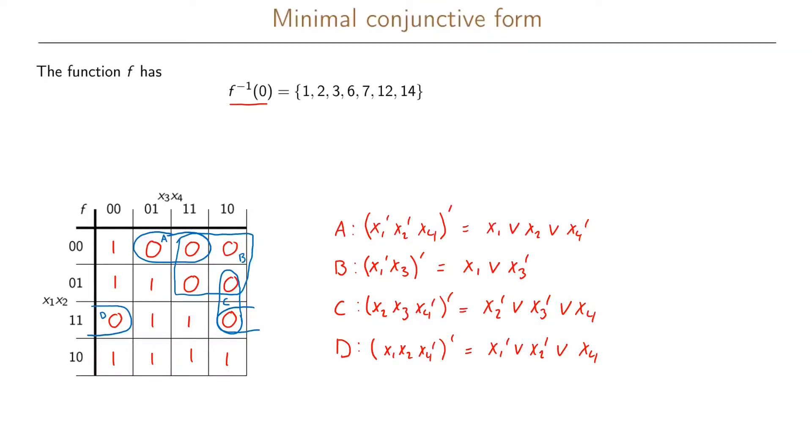Now we could use a prime implicant chart to find our minimal function, but it is also often easy to see immediately from the Karnaugh map which is our minimal function. If we look at the Karnaugh map we can see directly that A must be essential because it's the only box covering this zero. B is also essential because it's the only box covering this and these zeros. And D is also essential because it's the only box covering this zero.